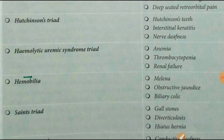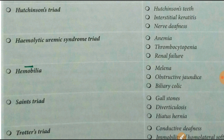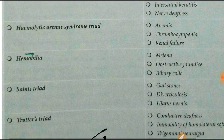Next one is hemolytic uremic syndrome triad. Hemolytic — that means hemolysis, so anemia occurs. Then thrombocytopenia. Next is renal failure — hemolytic uremic syndrome, so more urea, more chances of renal failure.